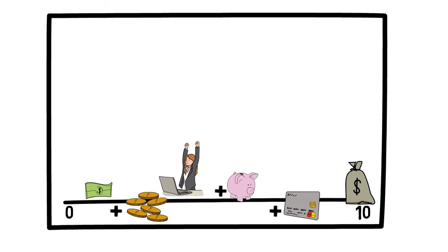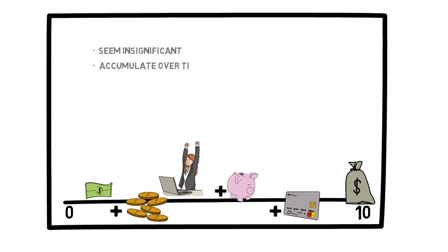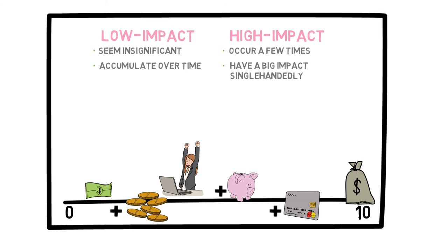To summarize, we can better understand the role that every decision and event plays in our life by categorizing them. Some seem insignificant in the grand scheme of things but accumulate over time — these are the low-impact decisions. Others, the high-impact decisions and events, occur only a few times but have a big impact single-handedly. Both of these categories are typically equally important in achieving goals in nearly every aspect of life.